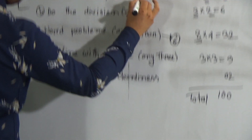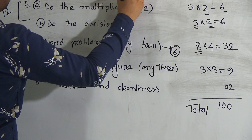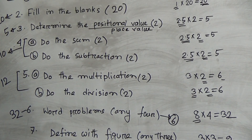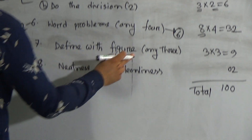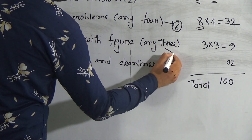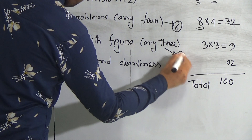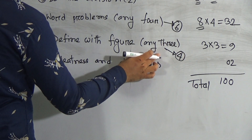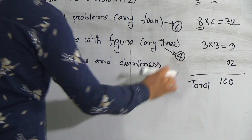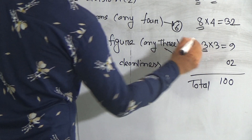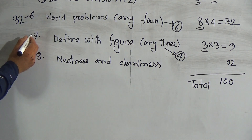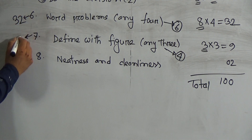Question number seven: define with figure. In the question paper you will get four questions and you have to answer any three. Each question contains three marks, so three threes are nine. In question number seven, there are nine marks.